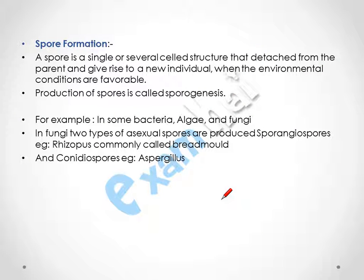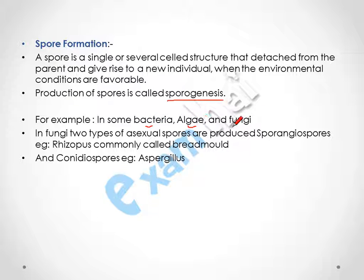Next is spore formation. A spore is a single or several-celled structure that detaches from the parent and gives rise to a new individual when environmental conditions are favorable. The production of spores is called sporogenesis. Examples are seen in bacteria, algae, and fungi. There are two types of asexual spores in fungi.